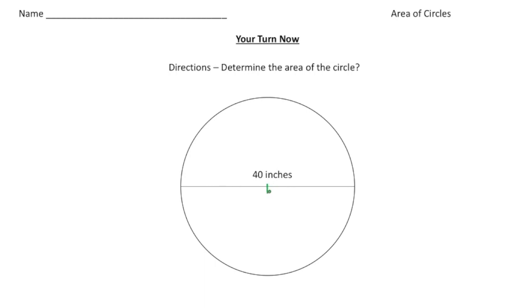we're going to take that and cut it right in half. So we know the radius is going to be 20 inches. So now that we know the length of the radius, let's write down the formula. So area equals pi times radius squared.